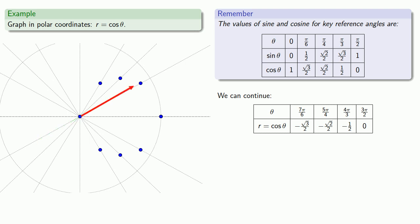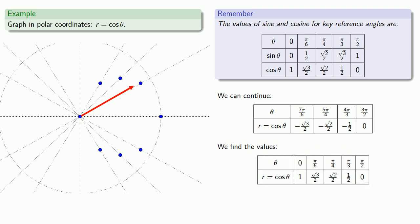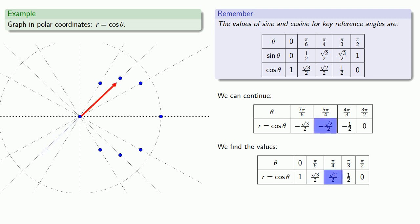Notice that if we walk backwards, we're going to land around or possibly on the points we previously plotted. If we compare the values of r for the corresponding angles, we see that the distance we go backwards is going to be the same as the distance we went forwards. As a result, our graph in this interval will just retrace the points we plotted before.